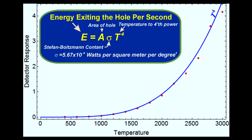The energy emerging is equal to the area of the hole times a constant called sigma times the temperature to the fourth power. The new proportionality constant sigma was named Stefan-Boltzmann's constant. The formula fit the data when the constant was adjusted to 5.67 times 10 to the minus eighth watts per square meter per degree to the fourth. This is Stefan-Boltzmann's law as originally formulated in 1880 from the best fit to the experimental data.